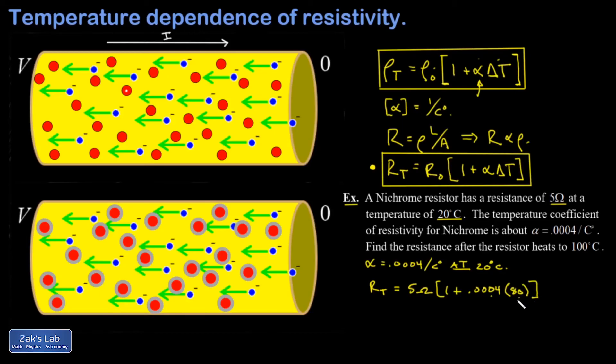And again, that alpha times delta T is unitless, so I end up with my original units of ohms, and I'm just scaling up the resistance here. When I run the numbers on this, I get 5.16 ohms for the final resistance. So that gives you a sense for what the magnitude of these changes with temperature really is.